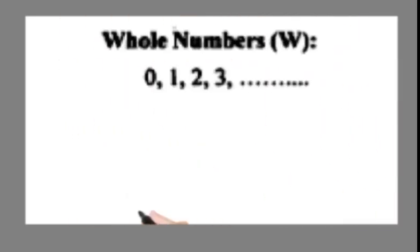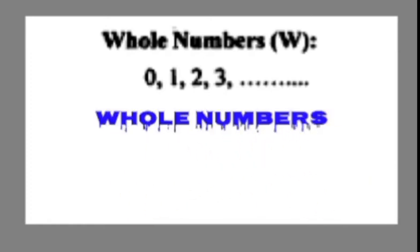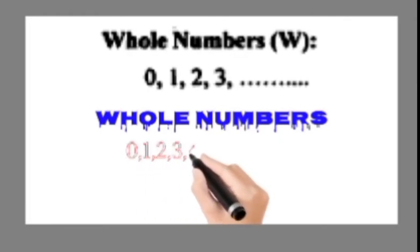Now next, Whole Numbers. That means natural numbers plus 0. With 0 is called whole numbers. So these are 0, 1, 2, 3, 4, and so on.